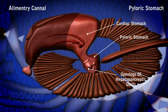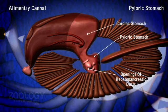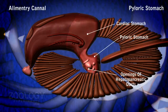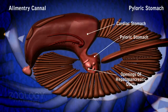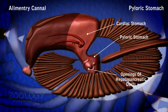The lateral walls of the pyloric stomach are thick, muscular, and prominently folded inwards so that its cavity is imperfectly divided into a big ventral chamber and a small dorsal chamber.